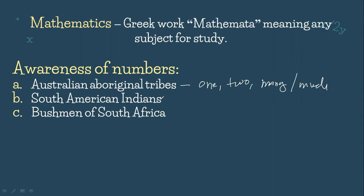Now for the South American Indians, the interesting thing about them is that they knew one and two. To have the concept of three, they called three 'two-one.' And their concept of four was 'two-two.' So basically, they just combined or partnered numbers to form three — which is our concept now of addition. And likewise, two and two — which is our concept now of addition — gives four.